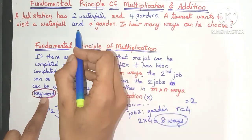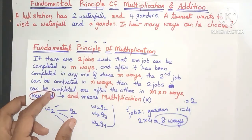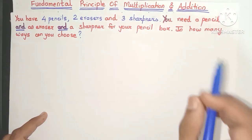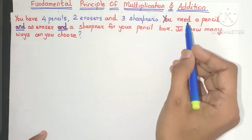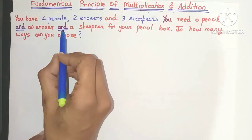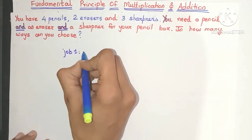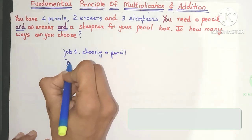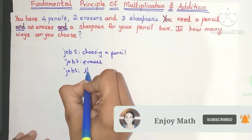The job is completed only if the tourist visits the waterfall and the garden. Now this principle can be extended to any number of jobs. Suppose you have four pencils, two erasers, and three sharpeners. You need a pencil and an eraser and a sharpener for your pencil box — remember we are combining all of these using 'and.' Job one is choosing a pencil, job two is choosing an eraser, and job three is choosing a sharpener.